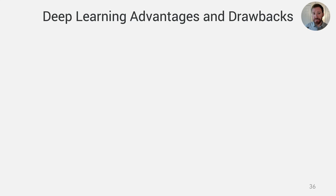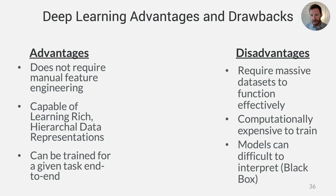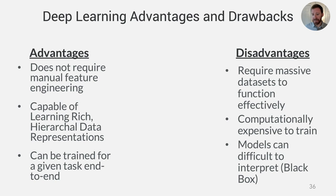There are definite advantages and drawbacks to deep learning techniques. Advantages include no manual feature engineering, the ability to learn rich hierarchical representations, and end-to-end training automation. However, trade-offs exist: they require massive datasets to function effectively, are computationally very expensive to train, and most problematically, the models can be very difficult to interpret — often functioning like a black box where it's difficult to understand why a given prediction is being made.